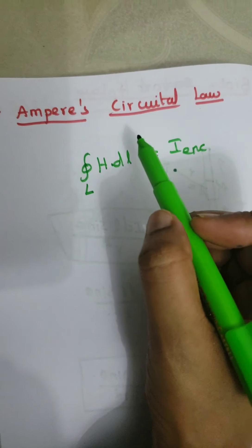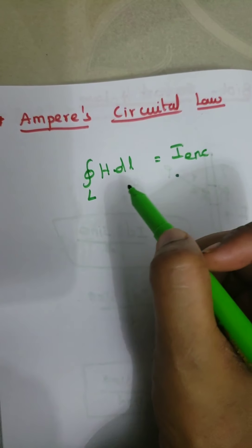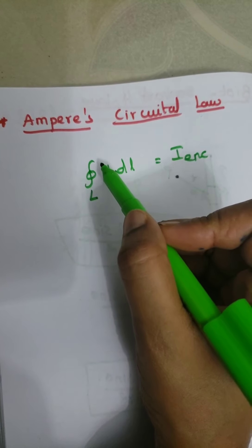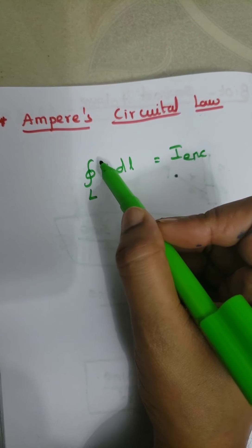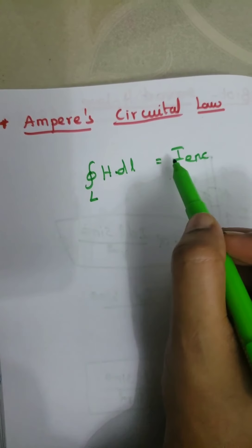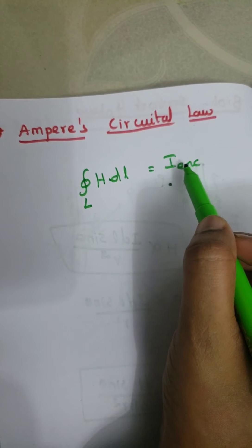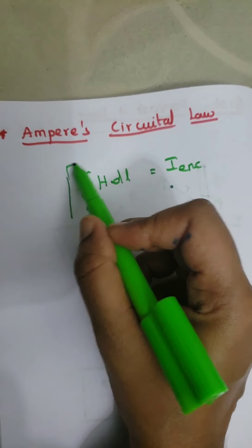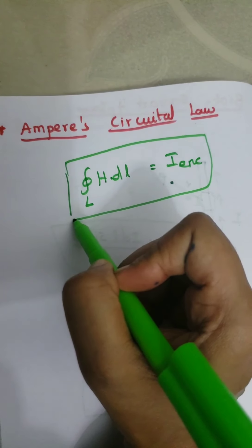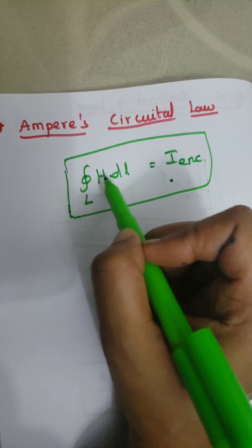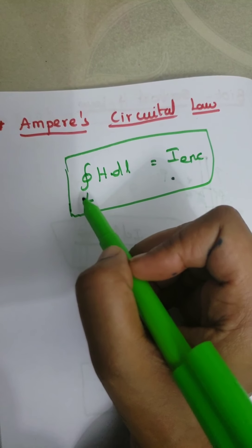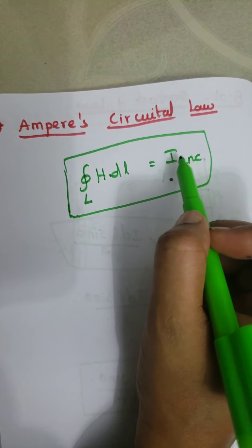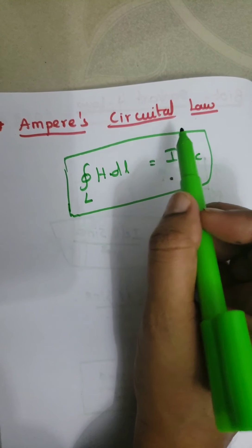Next we will see about Ampere's Circuital law. This law states that the magnetic field intensity along any closed path is equal to the current enclosed by that path — that is, the current carried by that closed path.